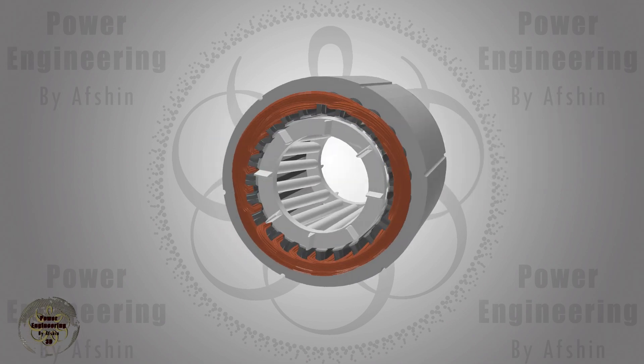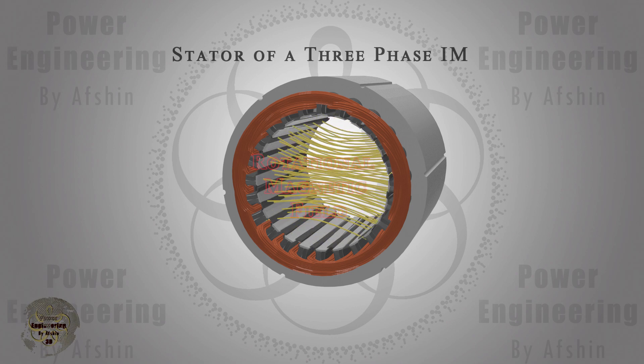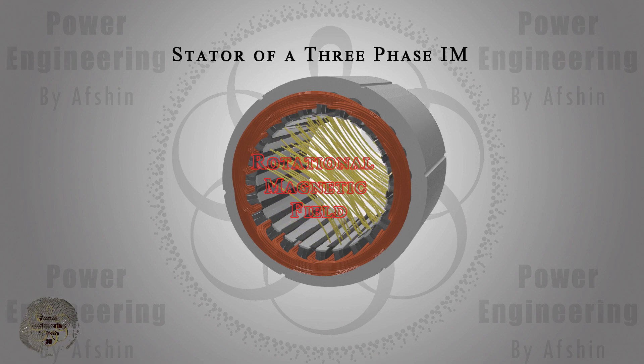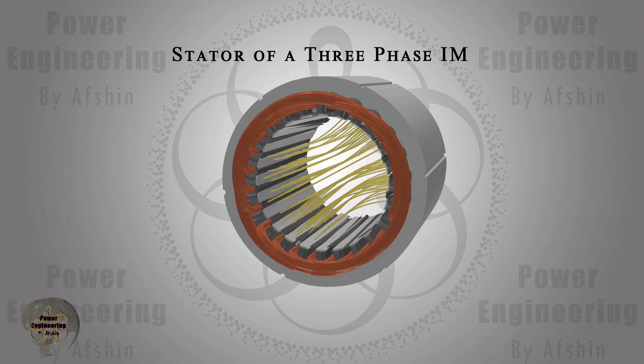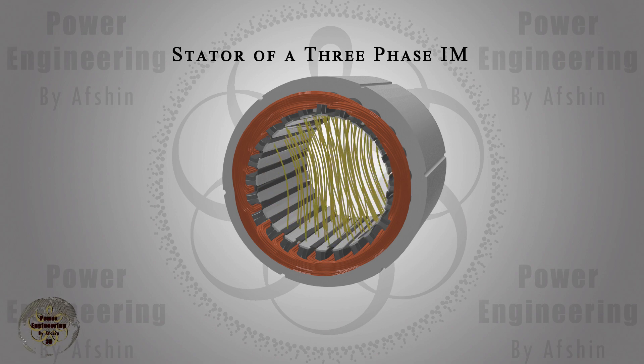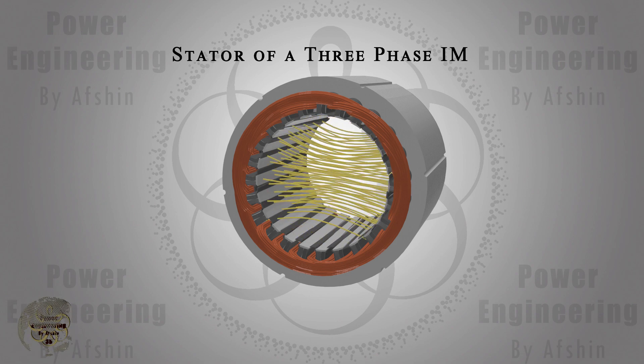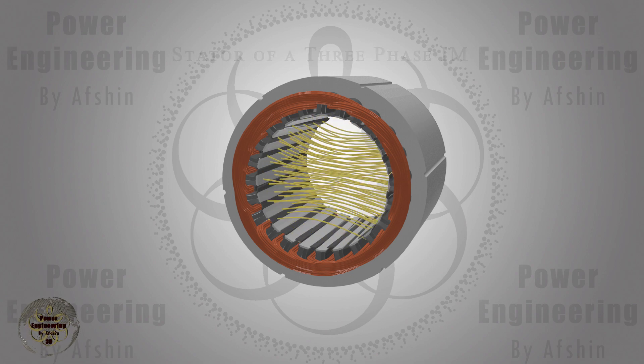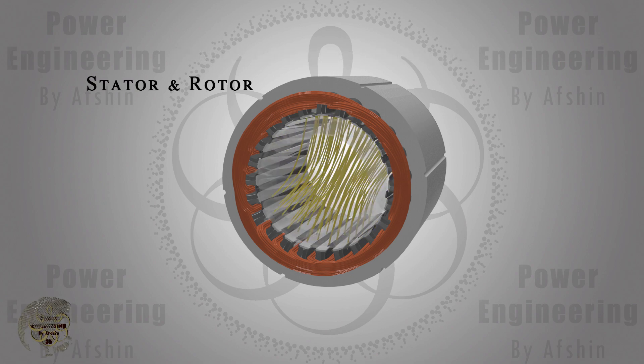In induction motors, the rotating field is not generated by spinning a permanent magnet, but rather by connecting the stator of a three-phase motor to a three-phase power supply to produce a rotating magnetic field through stator windings. To learn more about how the rotating magnetic field is created, watch the relevant video on this channel.